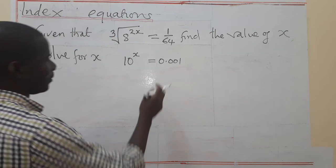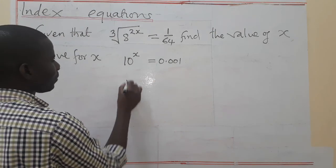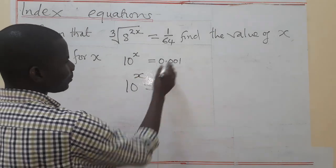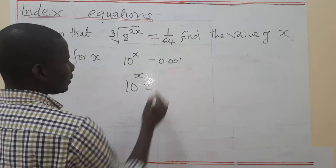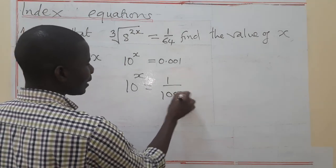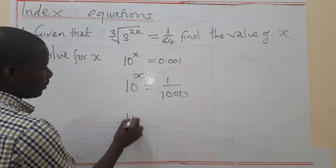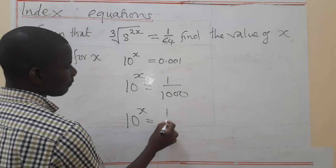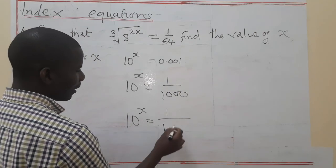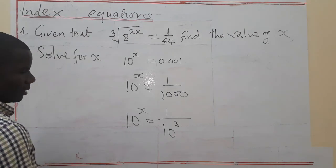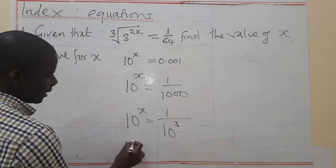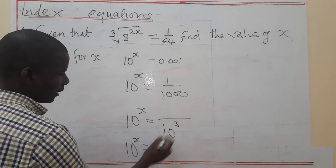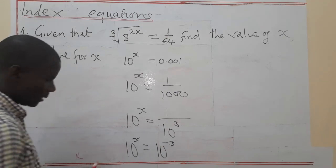So let's look at the second one. The process is actually the same. We need to write this one. We have 10^X equals, this is going to be 1/1000. Then we have 10^X / 10^3. Then we have 10^X equals 10^(-3).